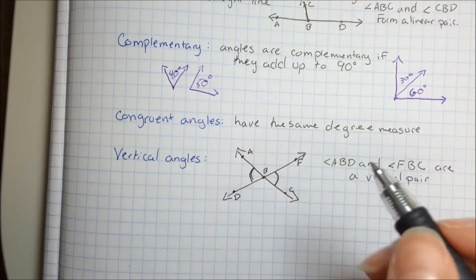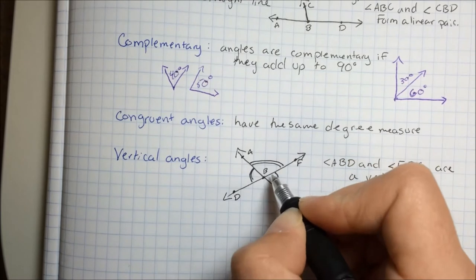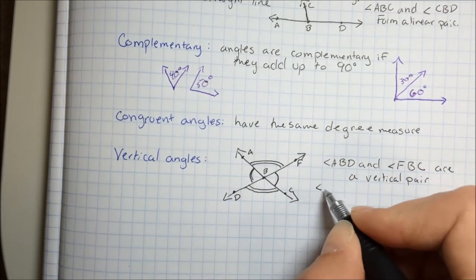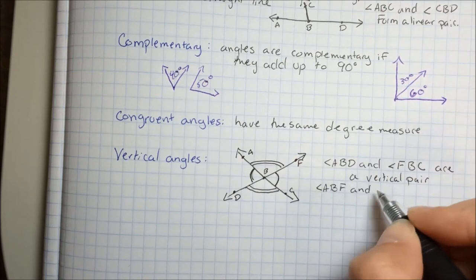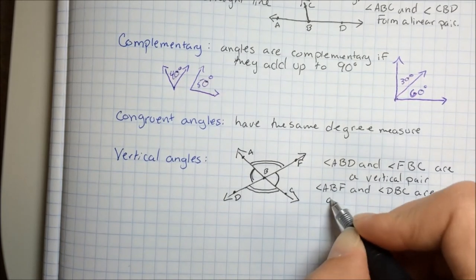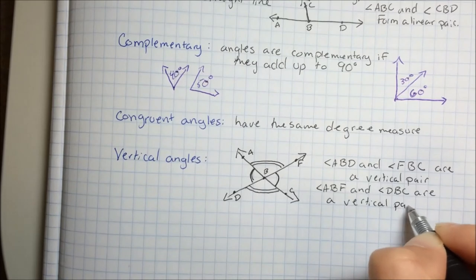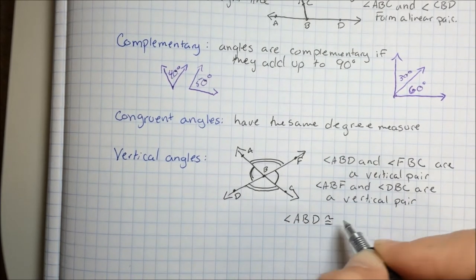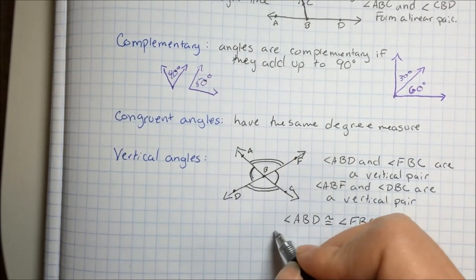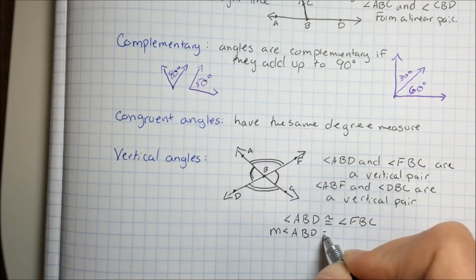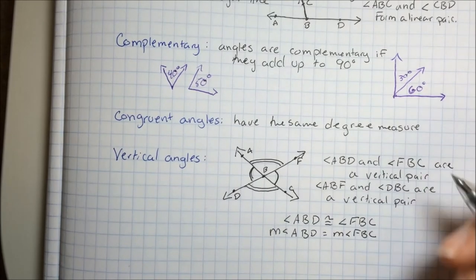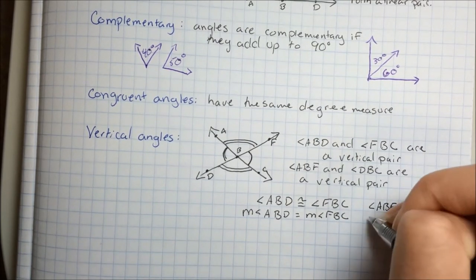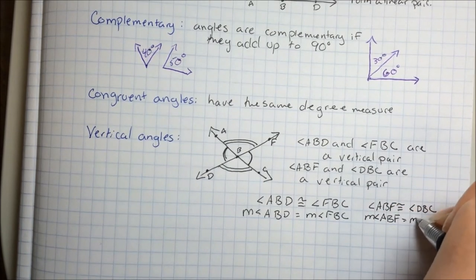Another pair of vertical angles in this diagram gets a double hash mark because they're different from the first pair. Angle ABF and angle DBC are also a vertical pair. So I can write that angle ABD is congruent to angle FBC, and their measures are equal. Angle ABF is congruent to angle DBC, and the measure of angle ABF is equal to the measure of angle DBC.